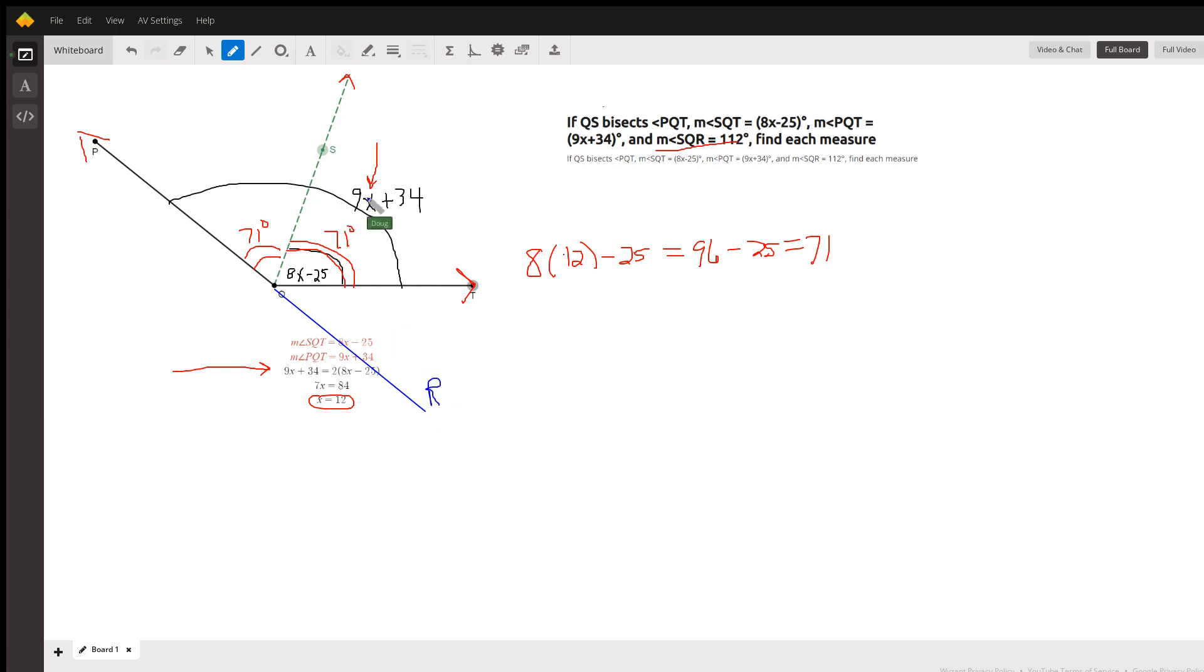And that means angle SQR is... I'm sorry, it's 112. So this angle right here, if that's what you're asked for, is 112 minus 71, or looks like 51. Okay.